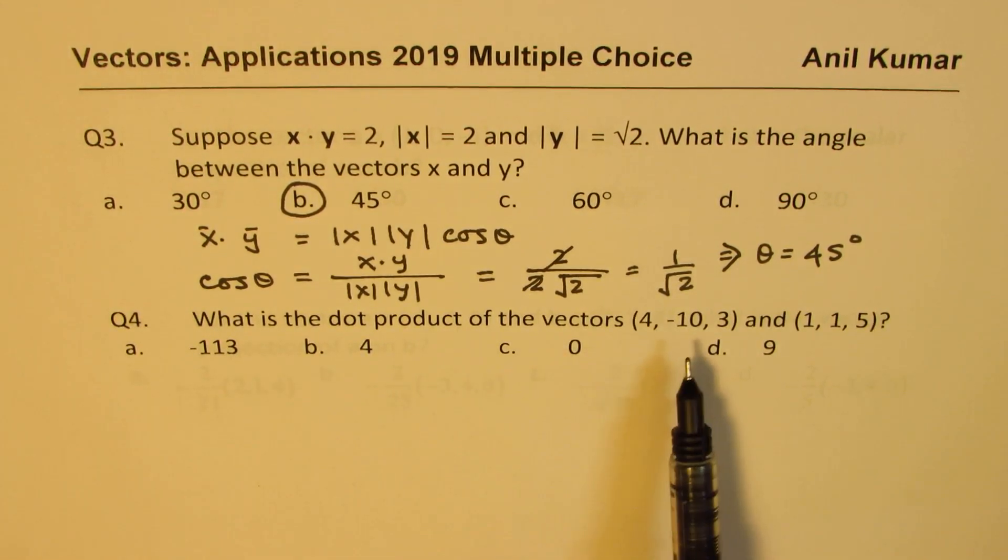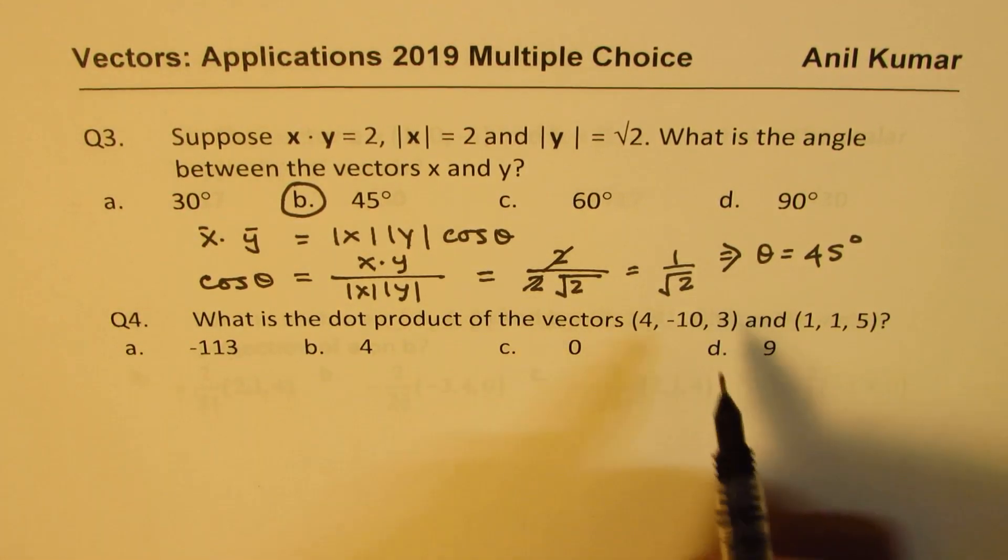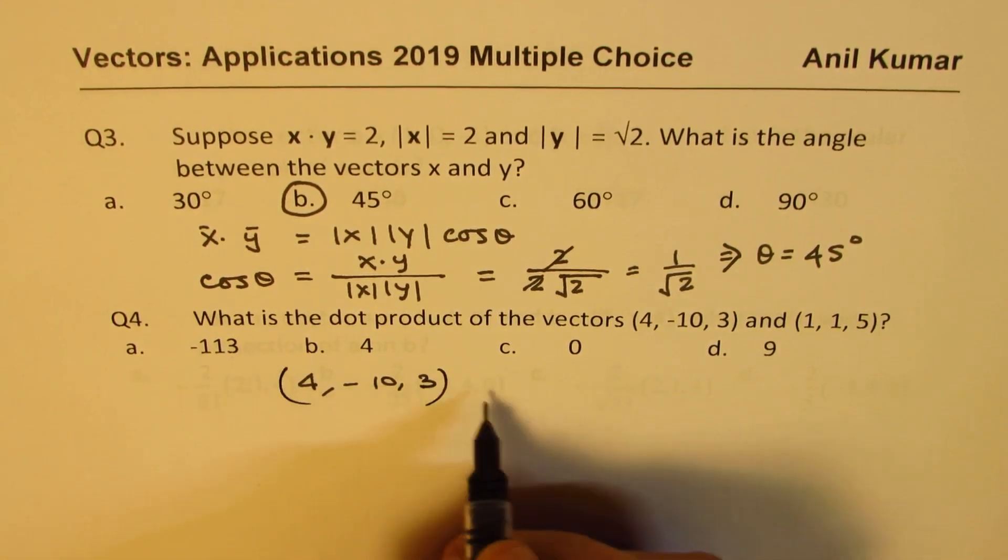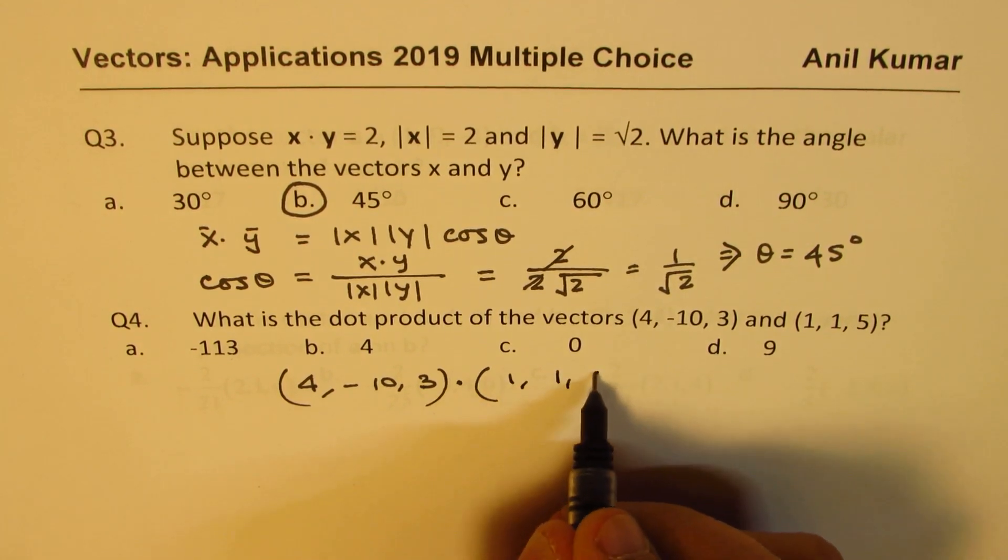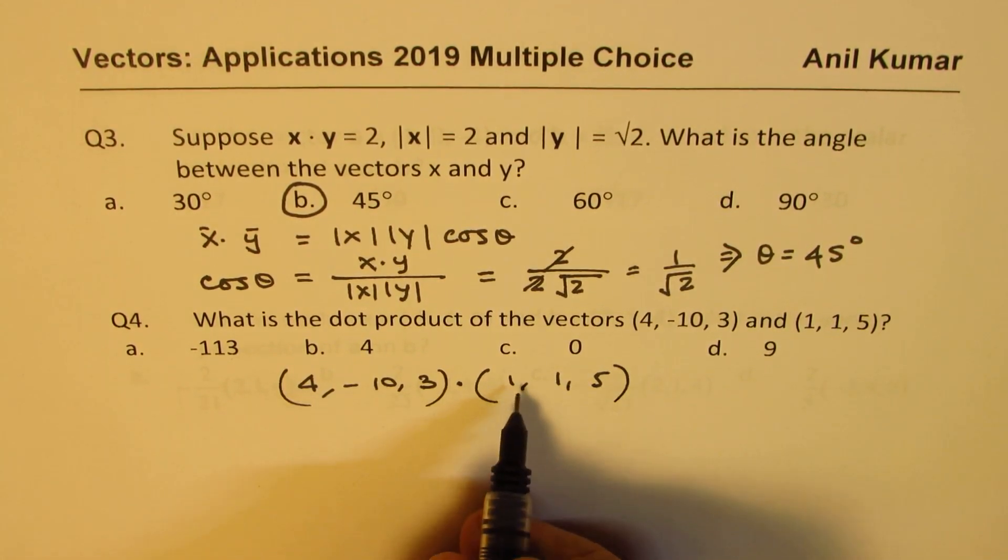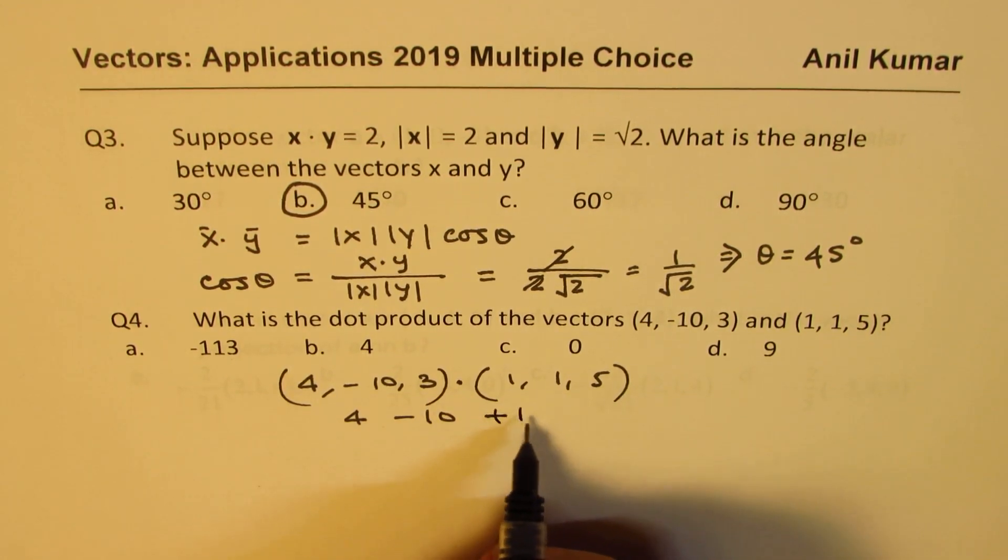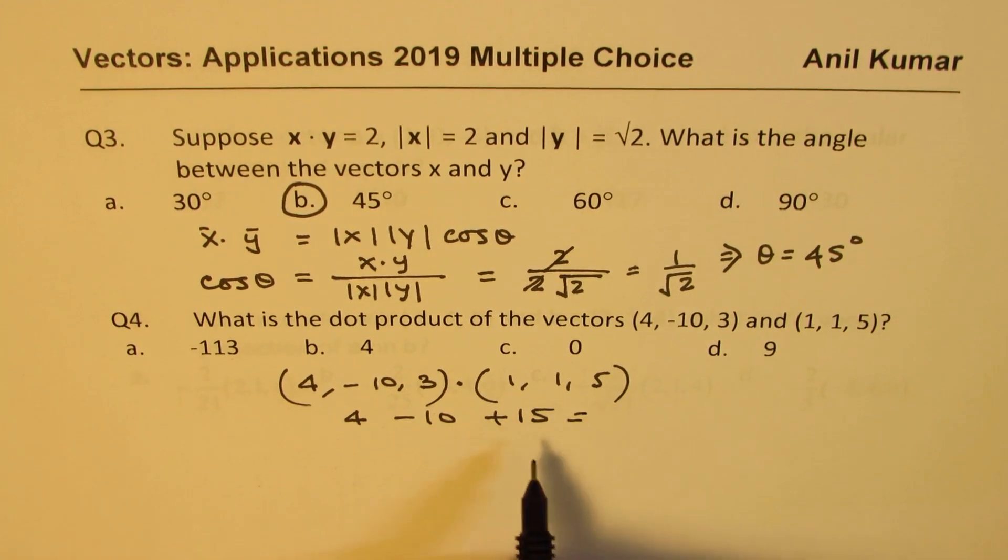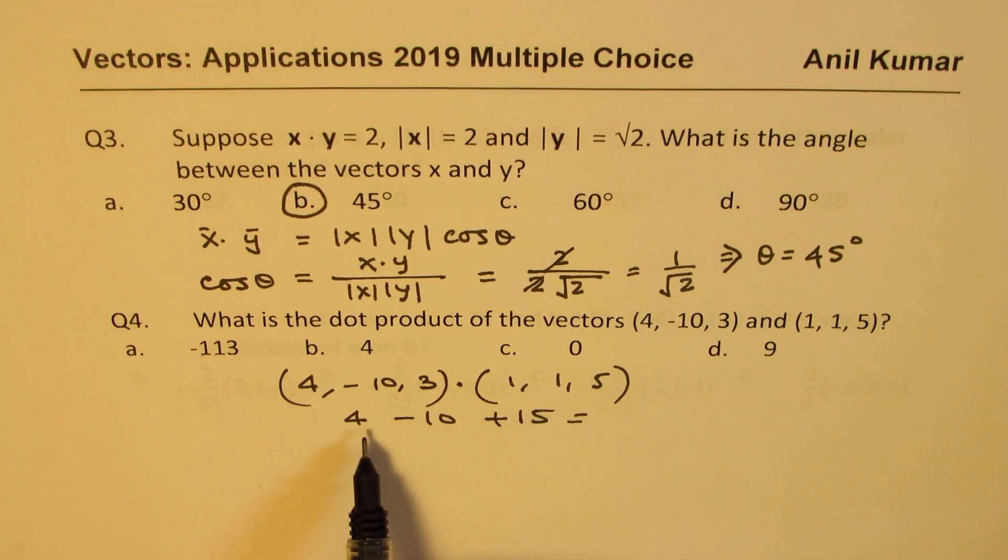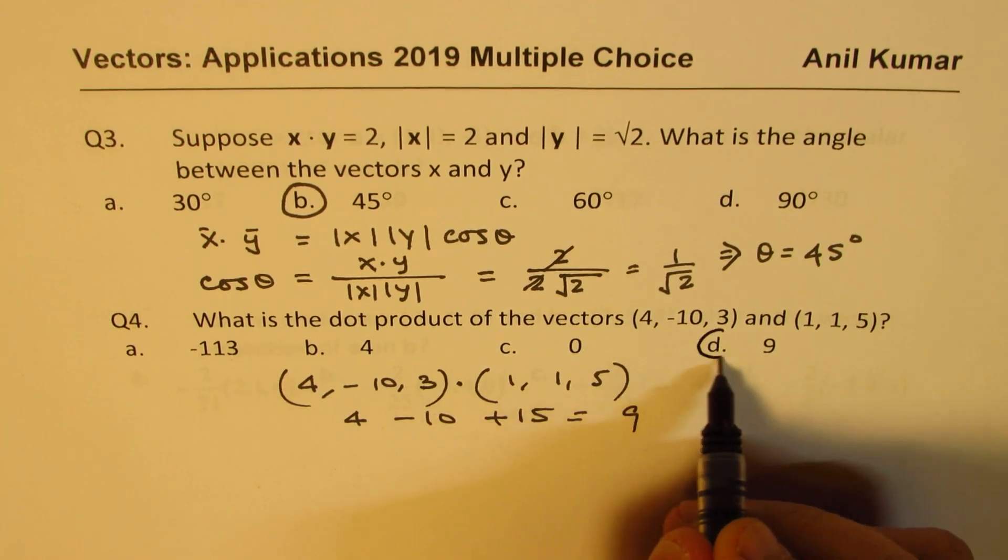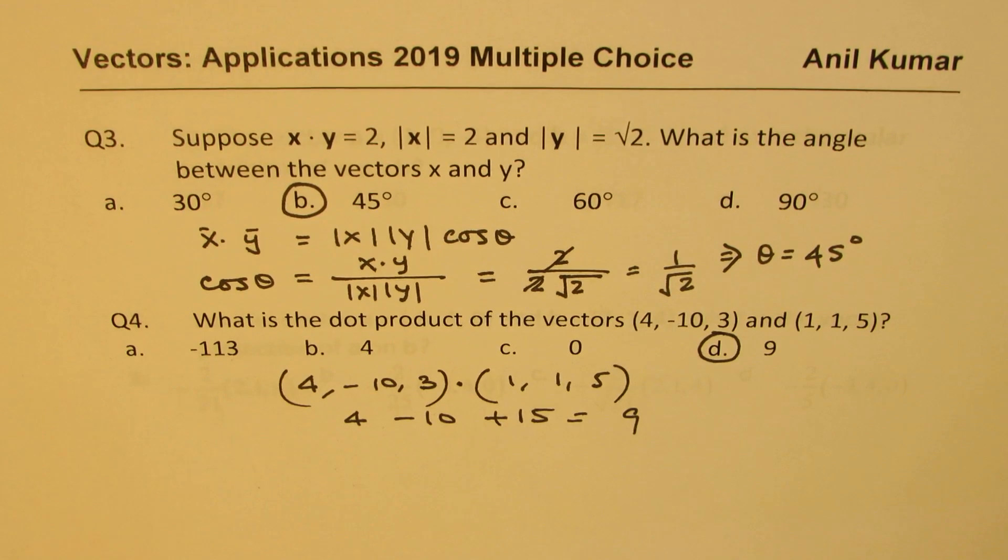Now, what is the dot product of these two? Let's do the dot product. We have (4, -10, 3) dot (1, 1, 5). So 4 times 1 is 4, minus 10, and 3 times 5, 15, with a positive sign. So when you take away 10 from this, you get 5, 5 plus 4 is 9. So 9 is there. So that becomes your correct answer.